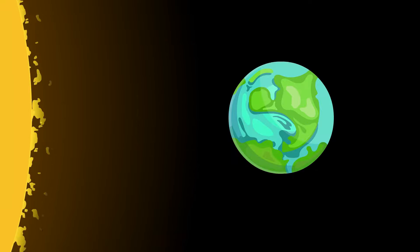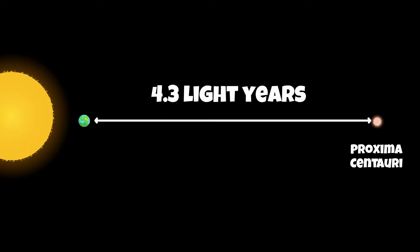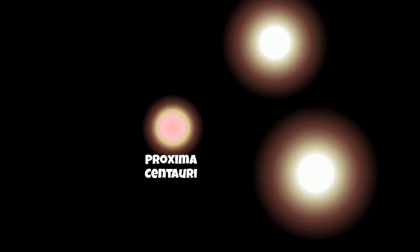After the Sun, the star closest to our solar system is Proxima Centauri. It is located 4.3 light-years from our planet. This star is actually part of a three-star system, the other two stars being Alpha Centauri A and Alpha Centauri B.